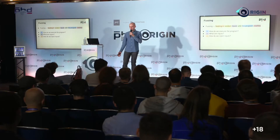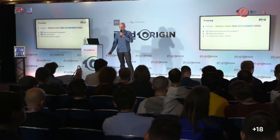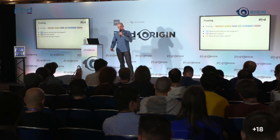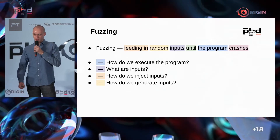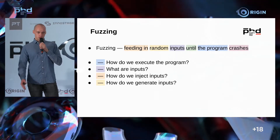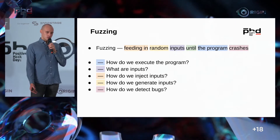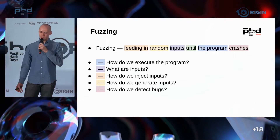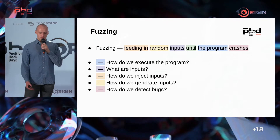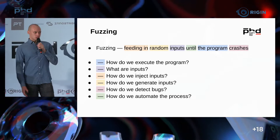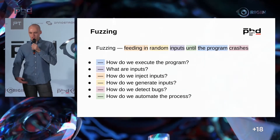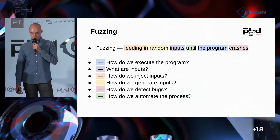What are the inputs and how do we deliver them? For something simple like XML, we just generate XML files and pass them. But if it's about a kernel, how do we pass the input to the right place? How do we generate inputs — random bytes or something smarter? How do we detect bugs? If the program crashes, it's likely a bug, but some bugs don't crash the program — a typical example is an information leak, like data leaking from the kernel. And finally, how do we automate the process? We don't want to manually create inputs; we want it to run automatically.